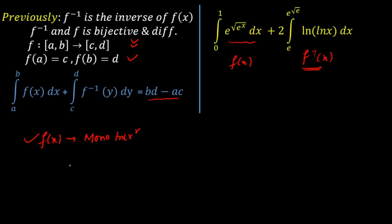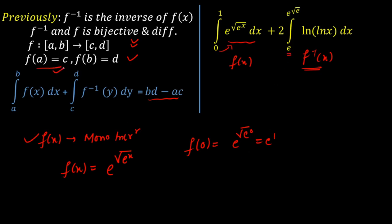The third condition is to verify the boundary values. For f(x) = e raised to the power of root over e raised to the power of x: f(0) = e raised to the power of root over e raised to the power of 0 = e raised to the power of 1 = e. So f(a) = c is satisfied with a = 0, c = e. Similarly, f(1) = e raised to the power of root over e raised to the power of 1 = e raised to the power of root over e. So f(b) = d is satisfied with b = 1, d = e raised to the power of root over e.